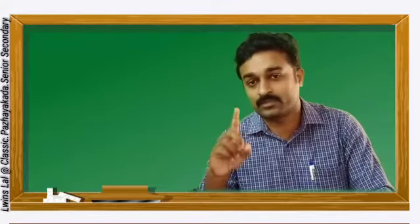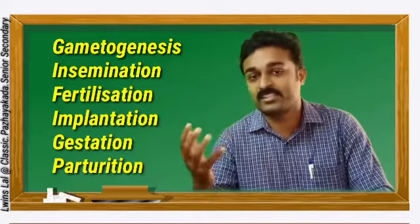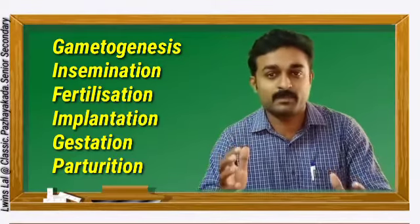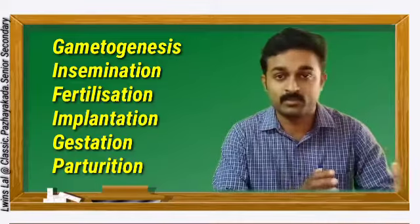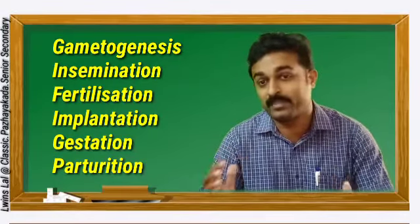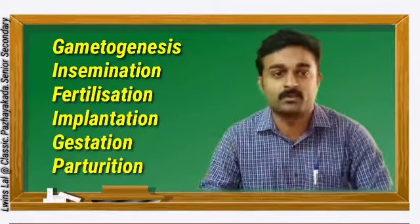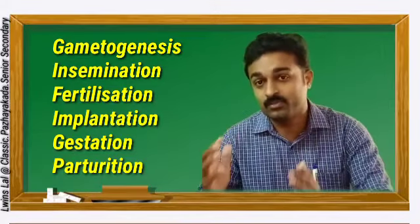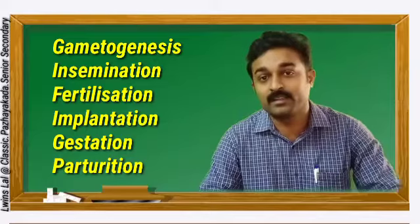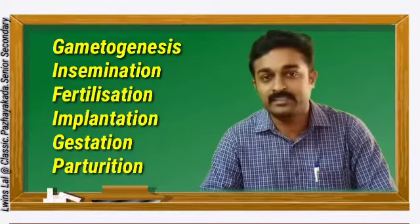The next one is gametogenesis — the genesis of the gamete, meaning formation of the gamete. The male gamete is called the sperm. Sperm formation is called spermatogenesis. The female gamete is called the egg. Formation of the egg is called oogenesis — the genesis of the egg — which is also called gametogenesis.